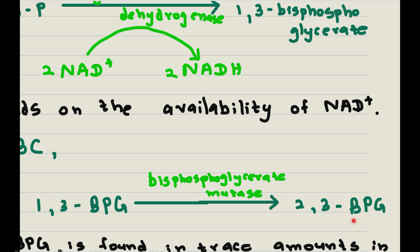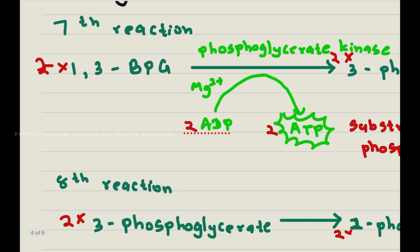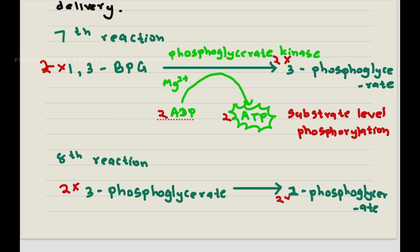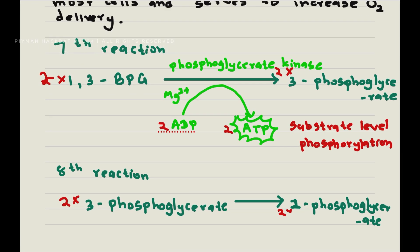2,3-bisphosphoglycerate is found in trace amounts in other cells, but in RBCs it is very high because it helps with oxygen delivery within the cell — so this is specific to the RBC. Then, 1,3-bisphosphoglycerate is turned into 3-phosphoglycerate, and two molecules of ATP are made — this is substrate-level phosphorylation. Next, 3-phosphoglycerate is turned into 2-phosphoglycerate.